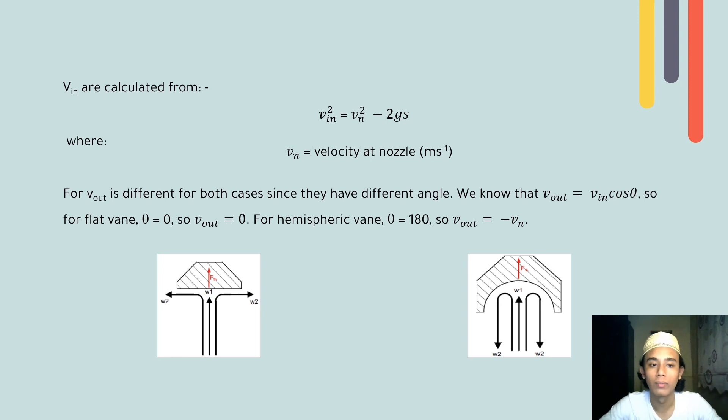V_in are calculated from V_in squared equals V_n squared minus 2gs, where V_n is equal to velocity at nozzle in meter per second. For V_out, it is different for both cases since they have different angles. We know that V_out equals V_in cos θ.